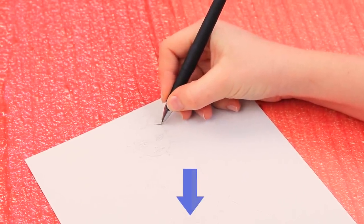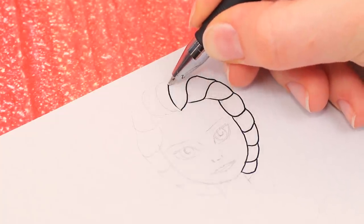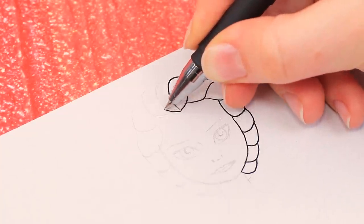We sketch out Elsa on a sheet of white cardboard with a regular pencil. You can download our sketches from the link in the description below. Carefully trace the drawing along the contour with a gel pen.